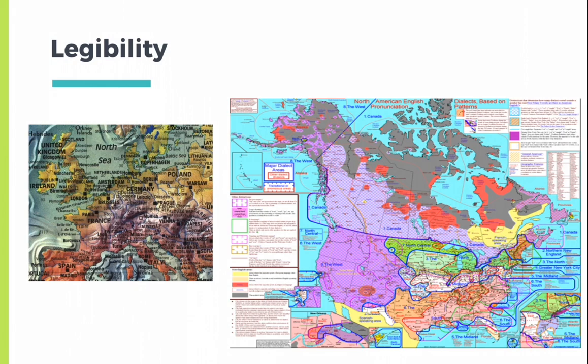For extremely bad examples of legibility, these two maps show Europe and dialect areas of North America. On the left, there are too many labels, contours, and colors. On the right, the legend shows the complexity of the subject, with colors, patterns, and lines inscribing the various dialect regions.